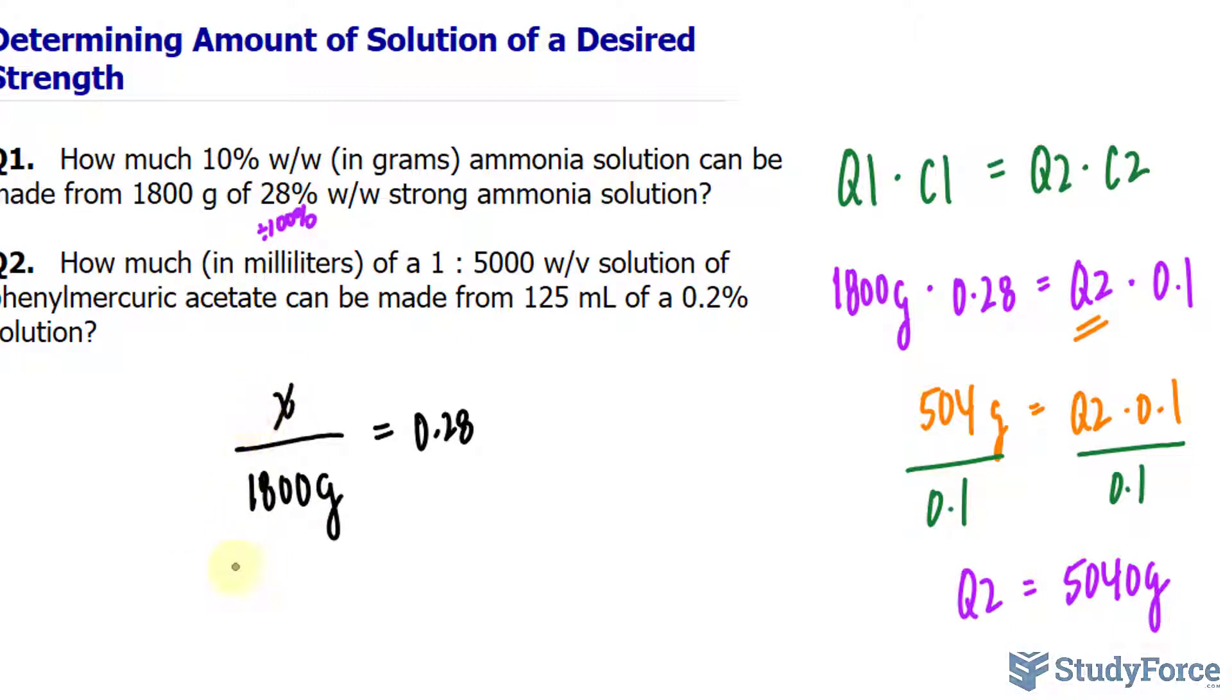We can easily solve for the active ingredient, its mass, by making this into a proportion. So I make 0.28 over 1, and I can solve this by cross-multiplying. Taking 1,800 times 0.28, that gives us 504 grams.